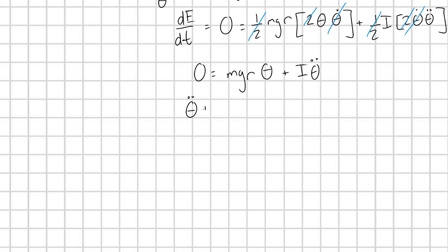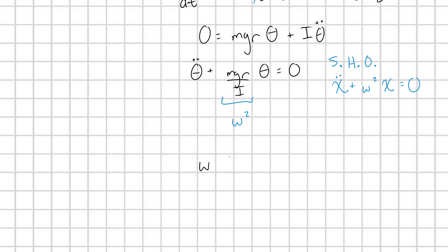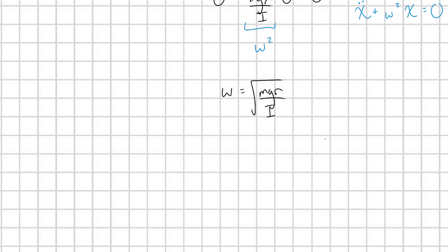And once we get to this differential equation here, we should snap our fingers, look at this and go, oh, this is the differential equation form for a simple harmonic oscillator. Okay, in general, the simple harmonic oscillator has a form that looks like chi double dot plus some angular frequency term squared times chi is equal to 0. Okay, and so matching these forms up, we can immediately extract out. This is our omega squared term, or in other words, the angular frequency of this physical pendulum is going to be equal to square root mgr over I. Or we could just write this as a frequency f, which would just be 1 over 2 pi square root mgr over I.